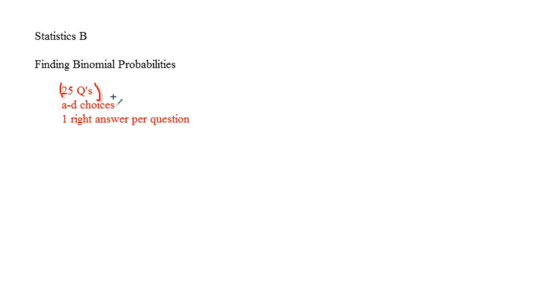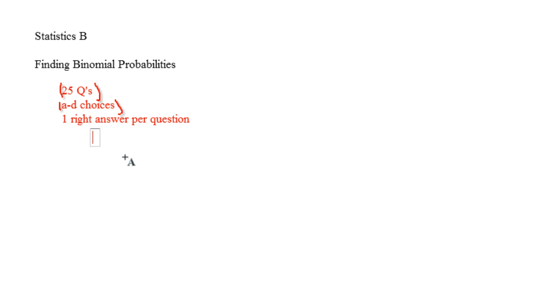There are exactly two outcomes for each of the questions — either you get it right or you get it wrong, so that's condition number two. Every trial is independent: if I choose incorrectly on number one, that doesn't affect my probability of choosing correctly on number ten. And the probability remains constant — the probability of a correct answer is 0.25 for each question. So I am dealing with a binomial probability.